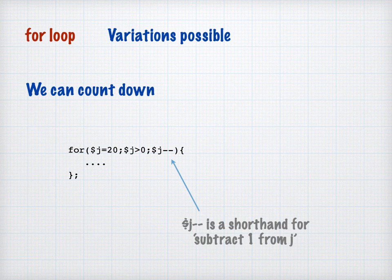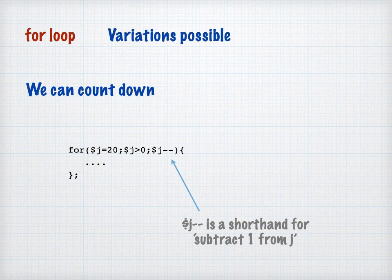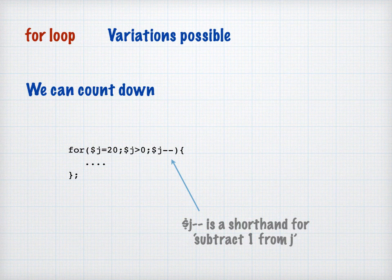So we'll go 20, 19, 18, 17, 16, etc., all the way down until J hits zero, at which point we will jump out of the loop. So let's have a look at a few examples of that.